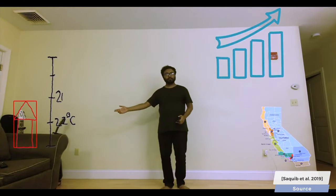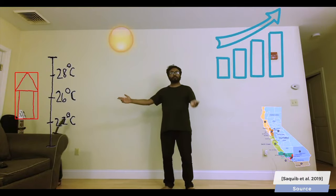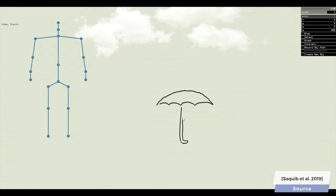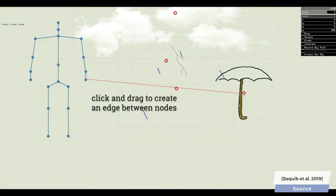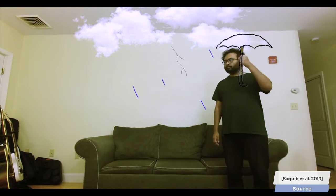A key part of the paper is the description of a user interface where we can design these mappings. This skeleton represents the presenter who is tracked by the Kinect camera, and as you see here, we can define interactions between these elements and the presenter, such as grabbing this umbrella, pulling up a chart, and more.